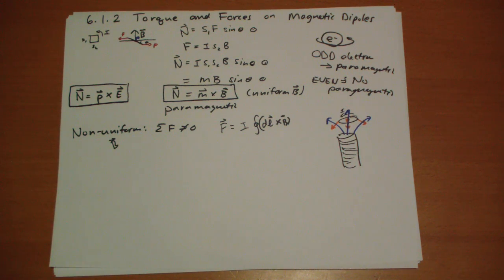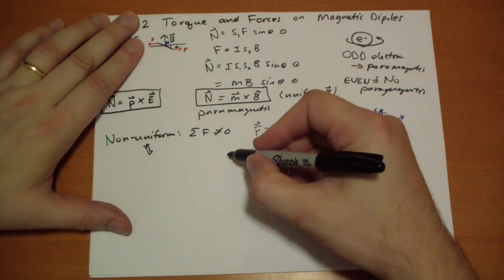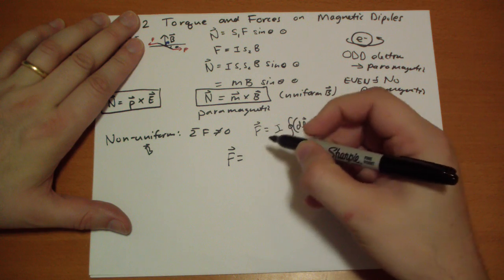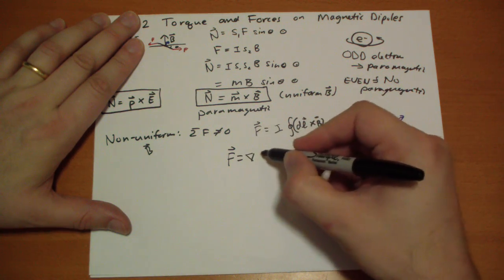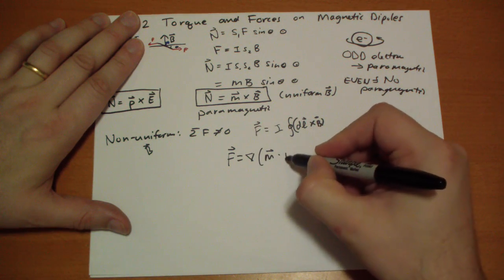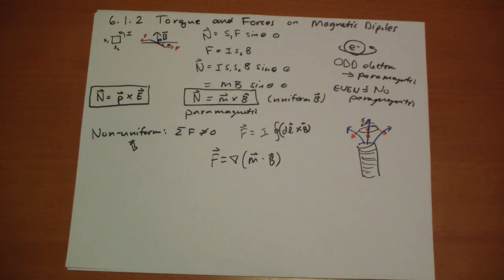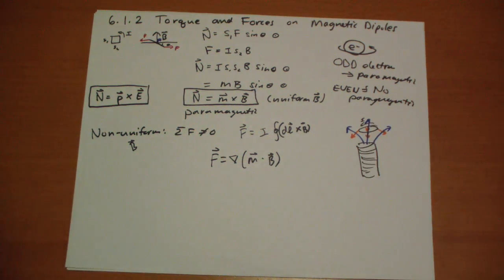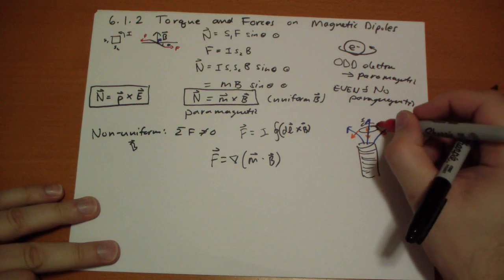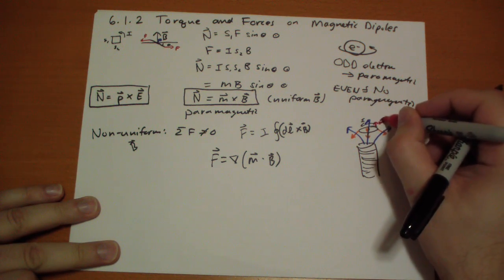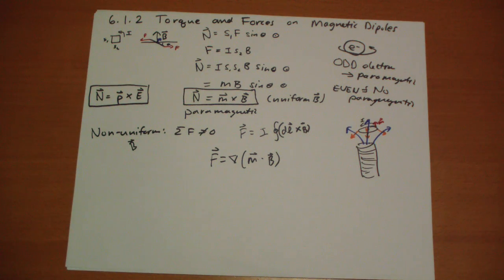A good expression for how you calculate the force in a non-uniform magnetic field is to take the gradient of the M vector dotted with the B vector. You take that infinitesimal dipole moment and dot product it with B. In this case the M vector would be pointing upward.